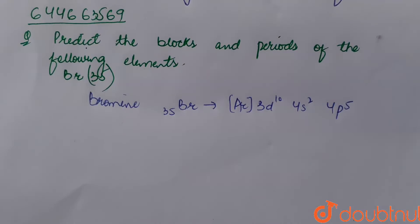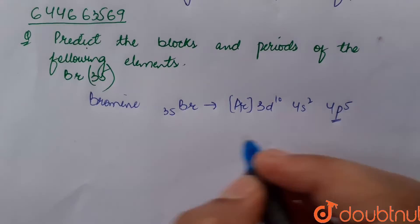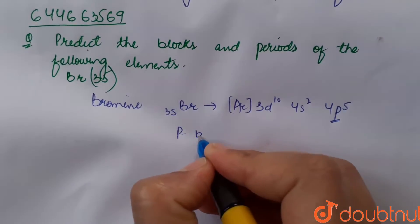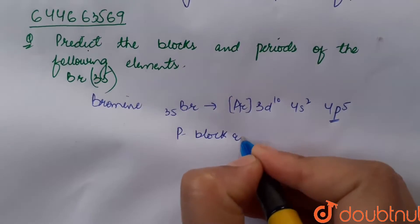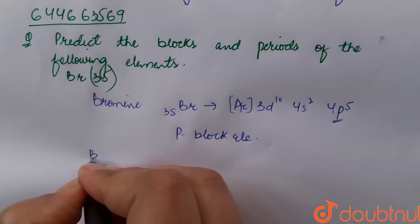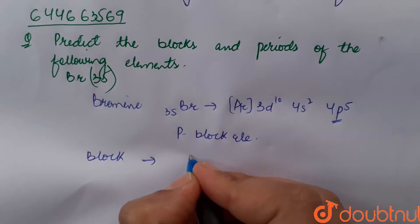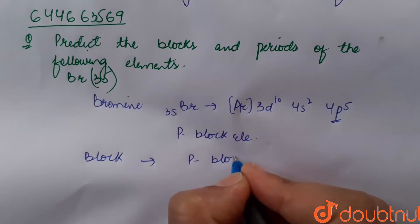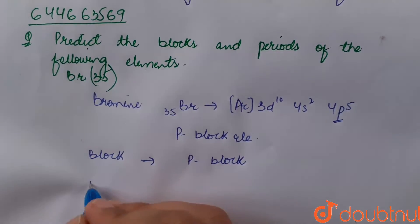Now as their balance orbital it's p orbital for bromine, p block element. P block element and the block to which bromine belongs is p block.